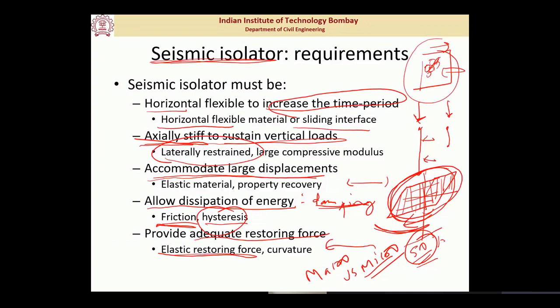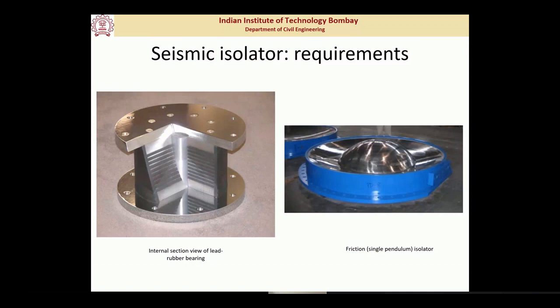Broadly satisfying the requirements just discussed, two popular types of isolator are commonly used today — though there are many others. They are popular because of their reliability and applicability to a wide range of structures. The first is the lead rubber bearing, shown here in a cut view revealing its internal section: multiple rubber layers constrained by steel shims in between, bearing plates, and a bolted external bearing plate for connection to the substructure and superstructure.